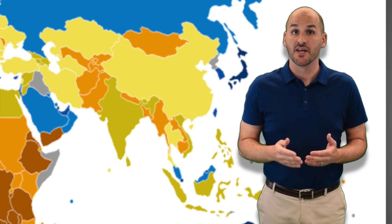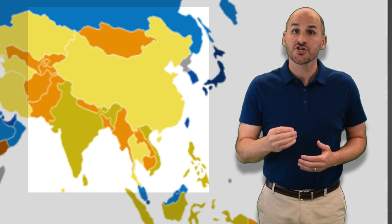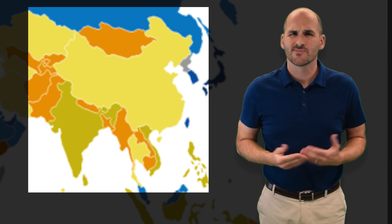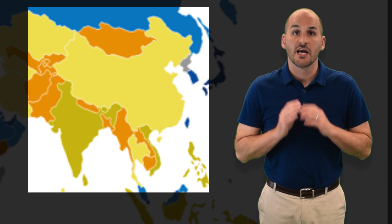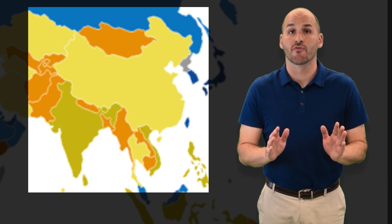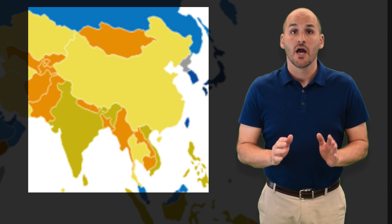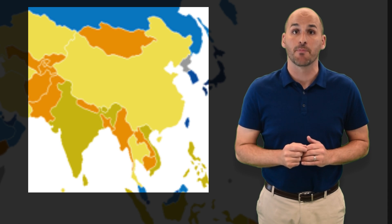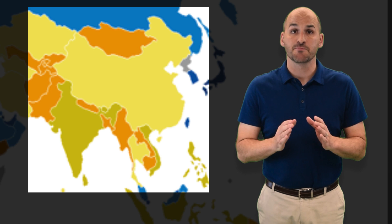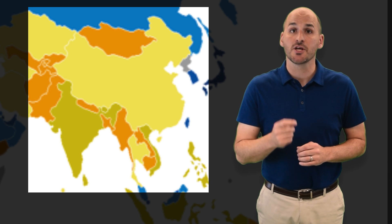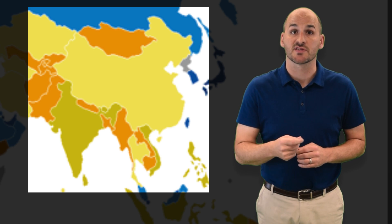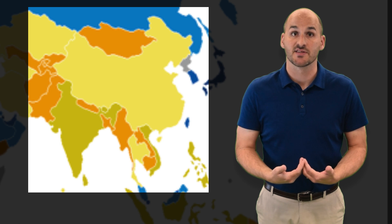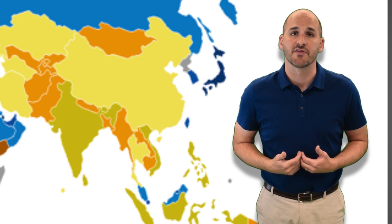Some countries, like China and India, actually rank in the top 10 highest real GDPs in the world. So why the low standard of living? It's because their populations are well over a billion, and population growth can easily outpace production of output in each country. This means that each country has fewer real GDP goods and services with which to meet the needs and wants of their citizens, leading to a lower standard of living.